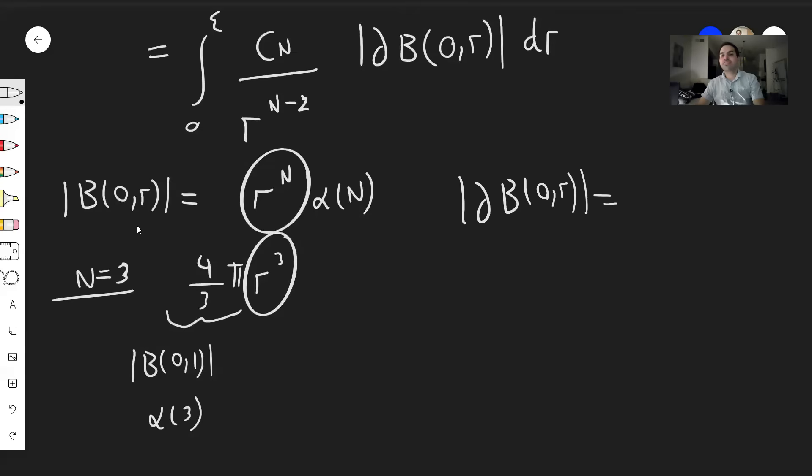And again, I have done a video on this. So N α_N R^(N-1). So what this becomes, it's N α_N R to the N minus one.